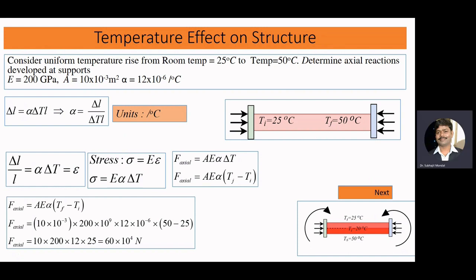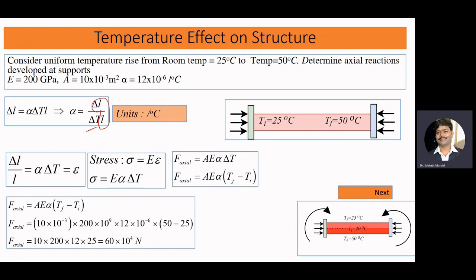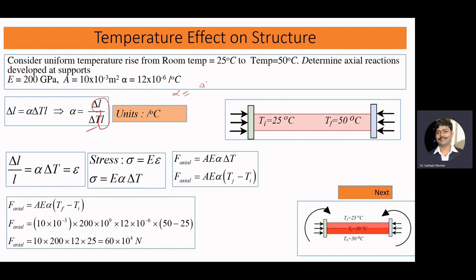In the last video, we learned that the coefficient of thermal expansion is the fractional change in length divided by the change in temperature. So the coefficient of thermal expansion is delta_L divided by L times delta_T. The unit of the coefficient of thermal expansion is per degree Celsius — since delta_L/L is dimensionless, the coefficient of thermal expansion has units of per degree Celsius.